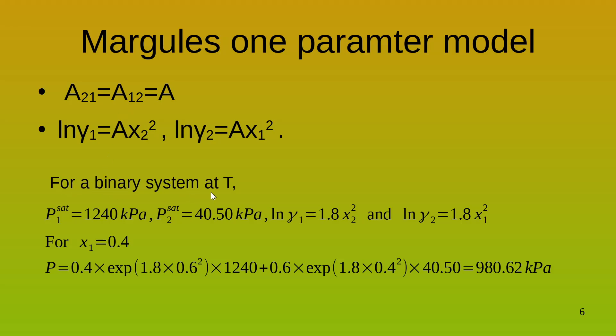For a binary system at a temperature T, we have the saturation vapor pressure of component 1 as 1240 kPa and the saturation vapor pressure of component 2 as 40.50 kPa. The Margules equation gives ln gamma 1 is equal to 1.8 x2 squared and ln gamma 2 is equal to 1.8 x1 squared. Now, let us calculate the boiling pressure of a mixture which has 40% component 1.